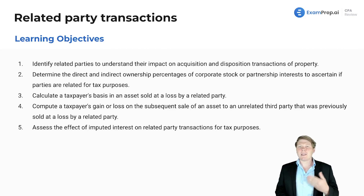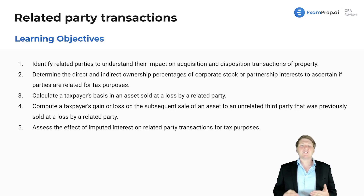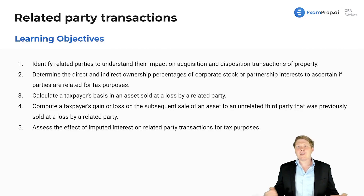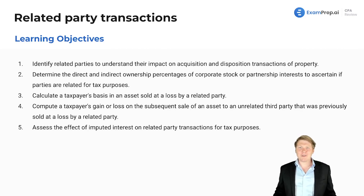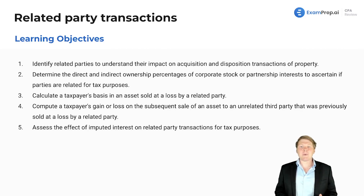We also want to understand and calculate a taxpayer's basis on assets sold at a loss by a related party. You can't just sell a bunch of assets at a loss to a sibling to try to recognize that loss for tax purposes — that's tax fraud, and we'll talk about that much more.